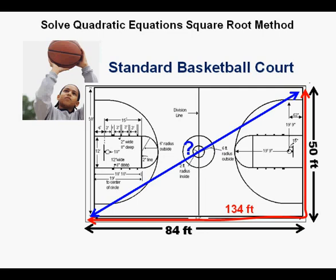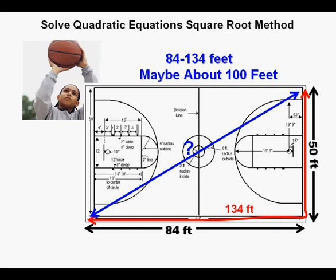His teammates ask him how far it would be if they would take a shortcut directly from corner to corner instead of going along the sideline. The shortcut is traced in blue here, corner to corner. While Joe doesn't know the answer right away, he knows it has to be more than the length of the court, but shorter than the total distance around. So it has to be somewhere between 84 and 134 feet. If Joe had to guess, he would say about 100 feet.